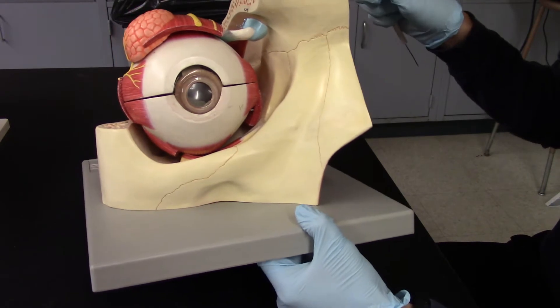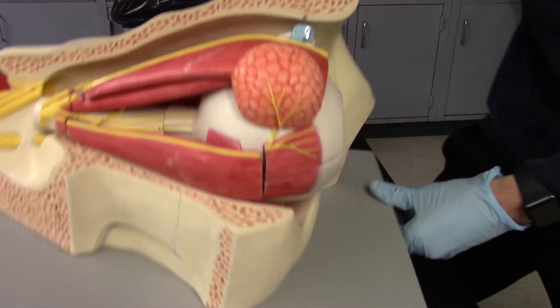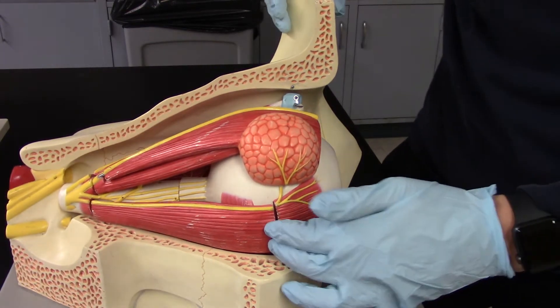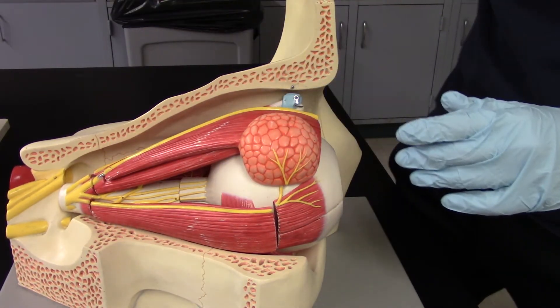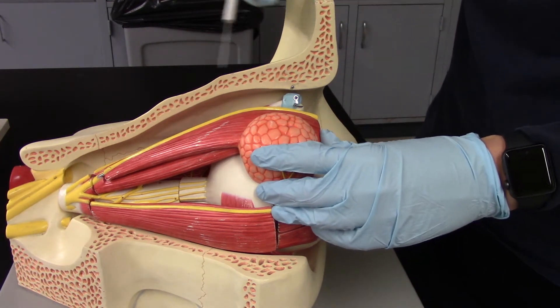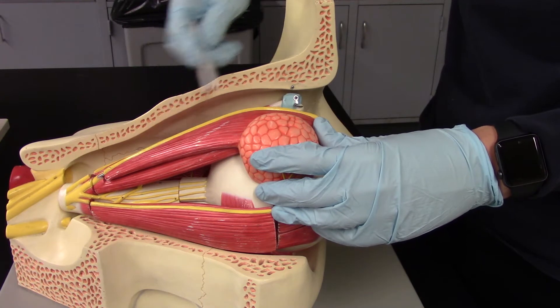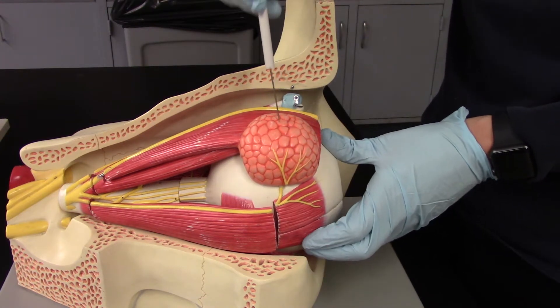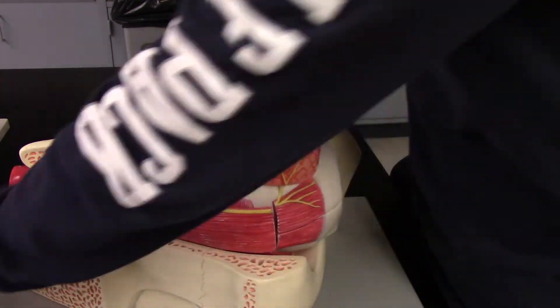So what's nice about all the rectus muscles is the superior rectus muscle is on top and makes a straight line. Lateral rectus muscle on the side makes a straight line. Oblique muscles are going to wrap a little more, so it's kind of a little different. Next up is our levator palpebrae superioris. It's going to be this muscle, which is connected to our lacrimal gland right here.